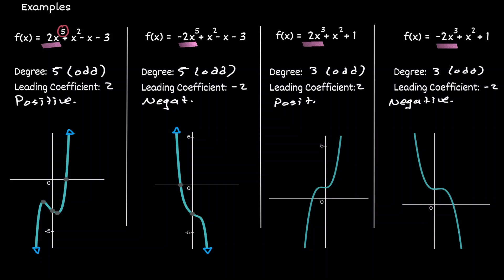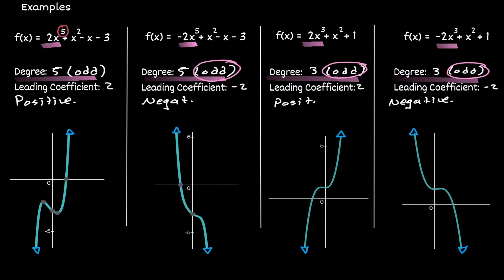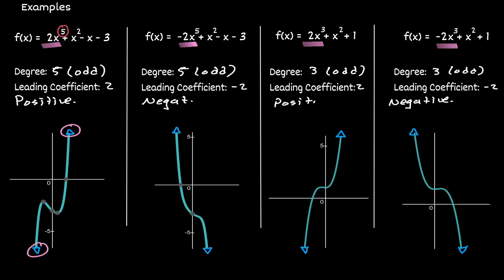On the next polynomial, as we go to the left we are decreasing, and as we go to the right we are increasing. And in the last polynomial, as we move to the left we are increasing, and as we move to the right we are decreasing. One thing to notice is that the degree of every single polynomial here was always of an odd value. And when we have this situation, the end behaviors will never face the same direction — one of them is going to go up and the other is going to go down.